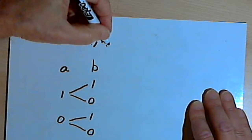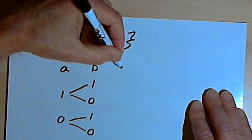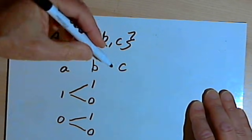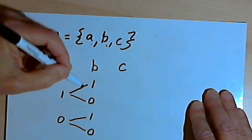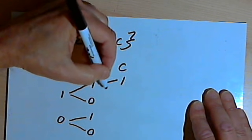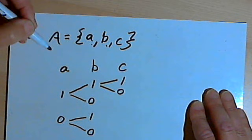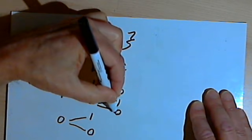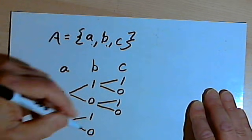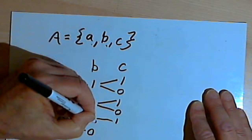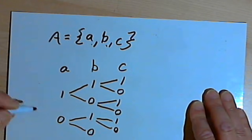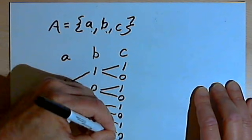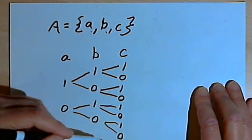If I add a third element, C, then for each of the possibilities I had with two elements, I've got two more possibilities. If there's an A and a B, I might have a C or I might not. If there's an A but no B, I might have a C or I might not. If there's no A but a B, I might have a C or I might not. If there's no A and no B, I might have a C or I might not. So now I've got eight possibilities.